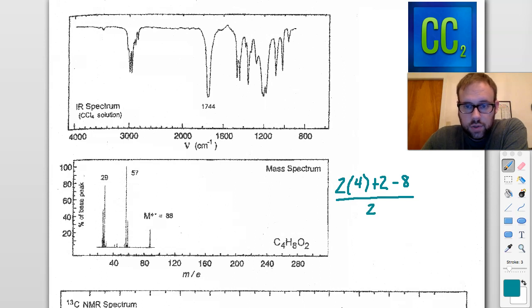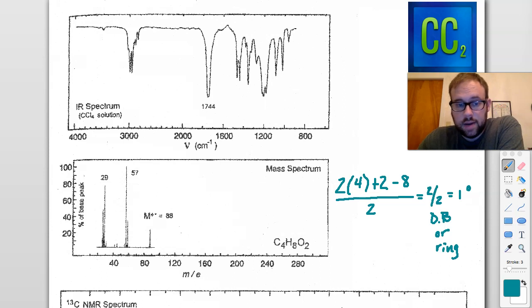So if we take a look here, two times four is eight, plus two is going to be ten, minus eight is two. So two divided by two is equal to one degree of unsaturation. So we have a double bond or a ring. So we know that we have some limitations set up from the start.